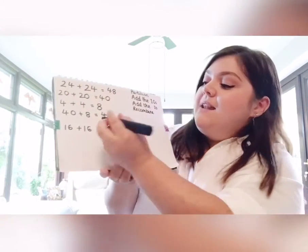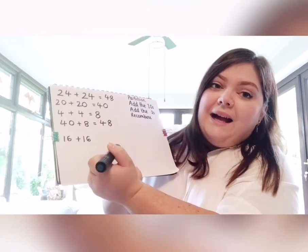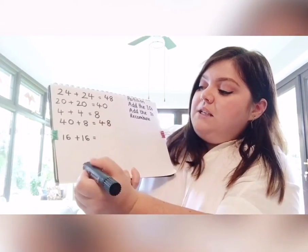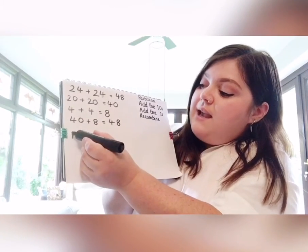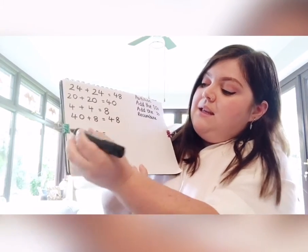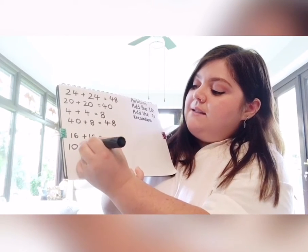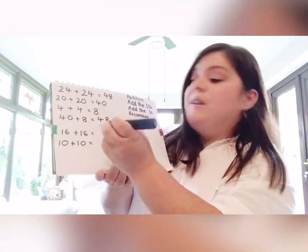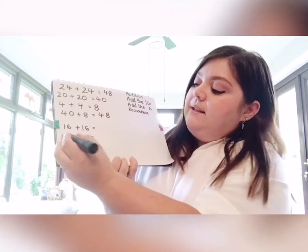Next one — I now have 16 add 16. Partitioning the tens and the ones: I have a 10 here and a 10 here. 10 add 10 equals... And the ones: six add six.